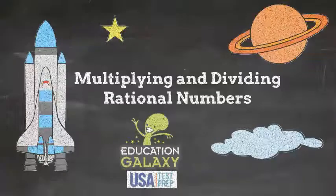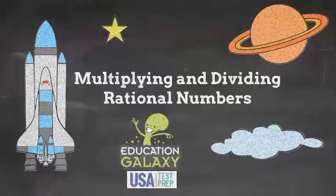You now know how to multiply and divide rational numbers. Remember, follow the steps and always check for reasonableness at the end. Good luck!